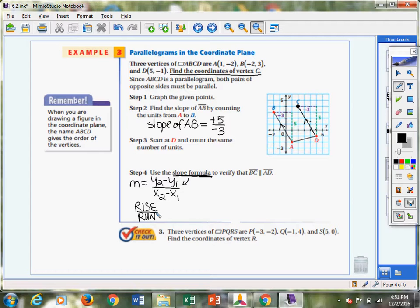And so if we find the slope of AD, if I start at A and I go up 1 over 1, 2, 3, 4. Up 1, right 4, that's a slope of 1 fourth.